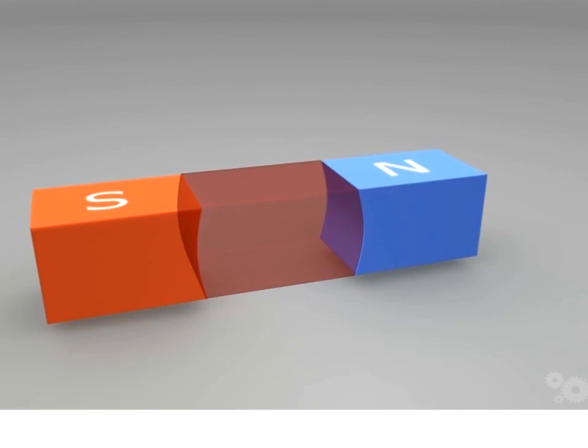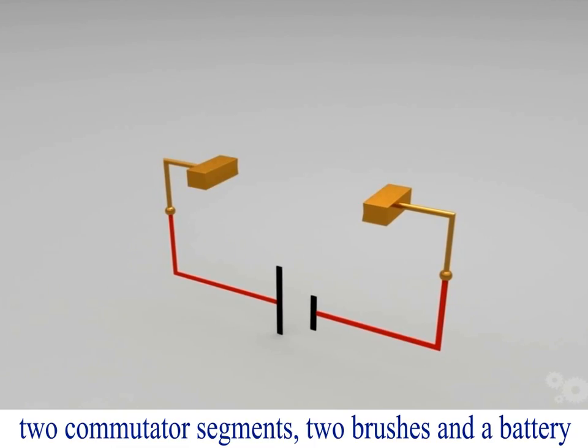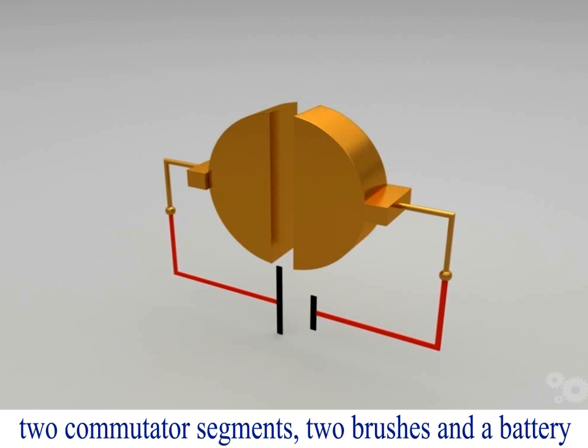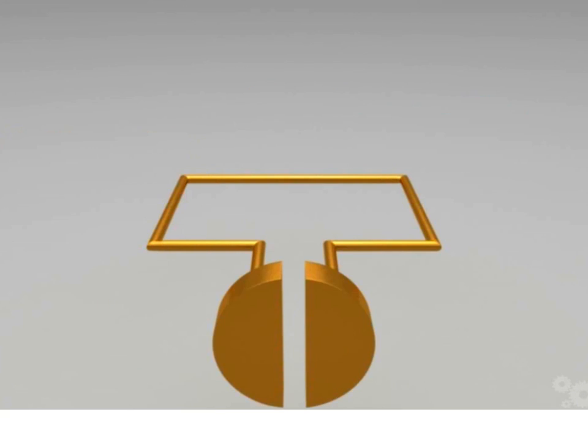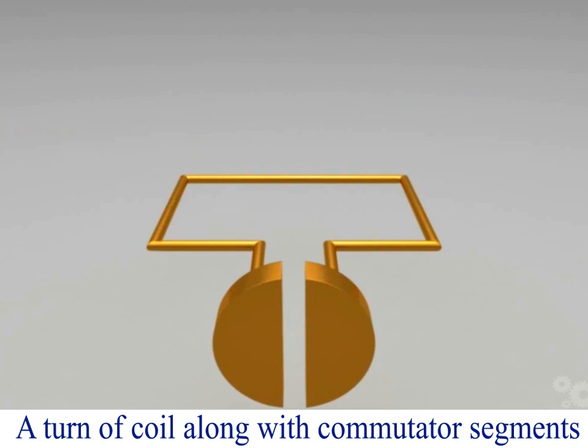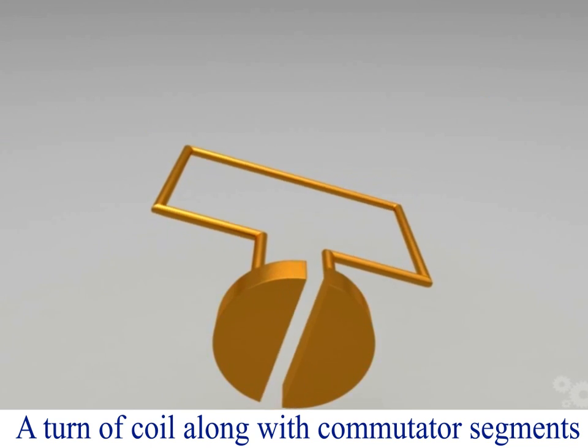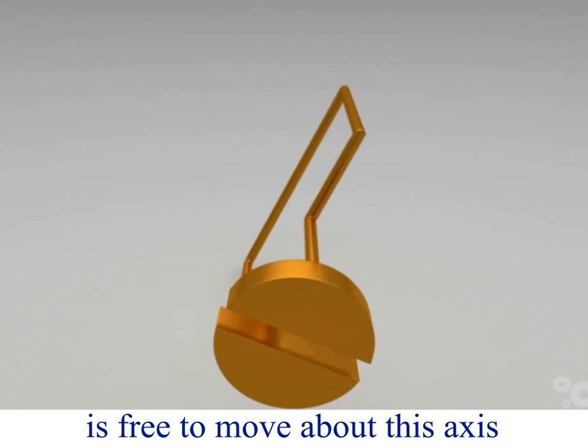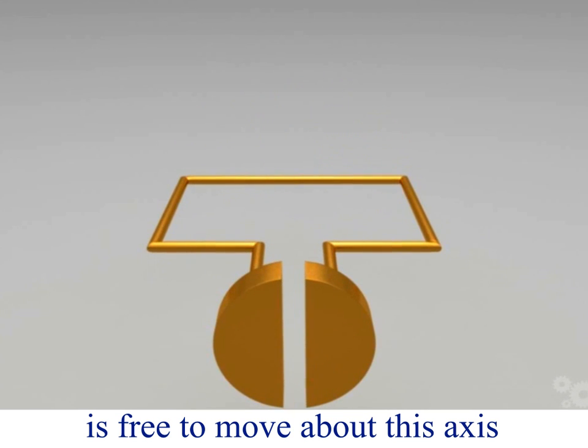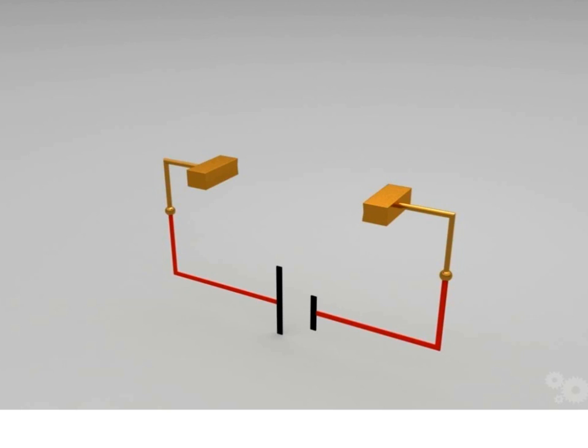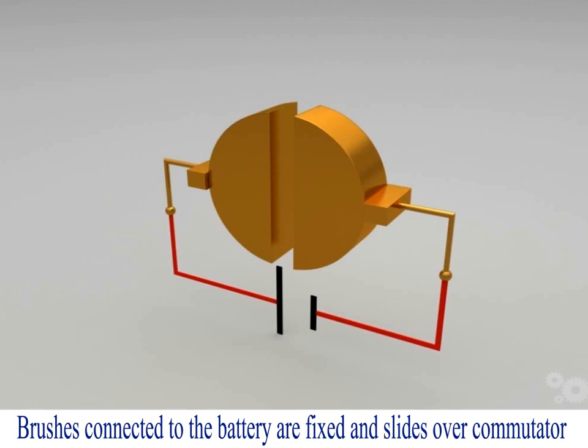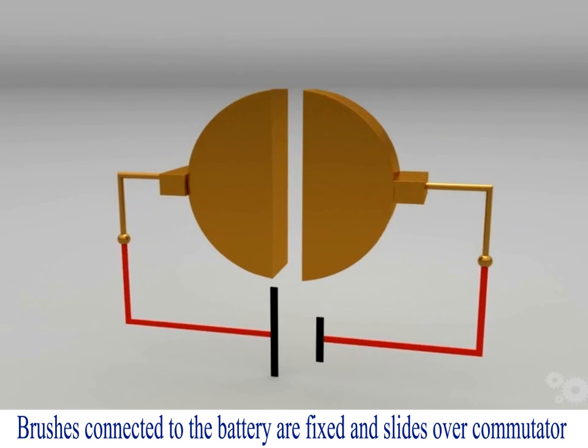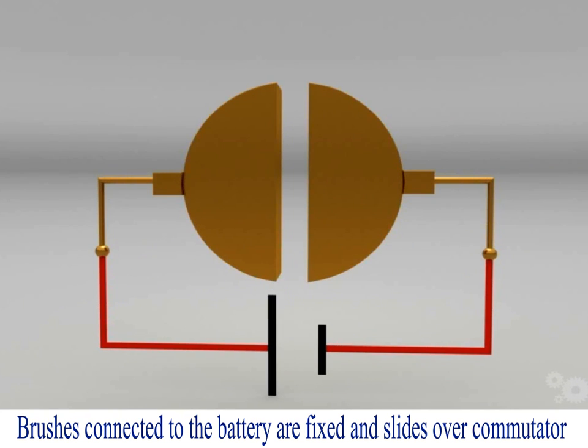The model includes two commutator segments, two brushes, and a battery. The turn of coil along with commutator segments is free to rotate about the axis. Brushes connected to the battery are fixed and slide over the commutator.